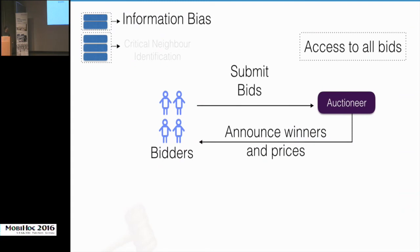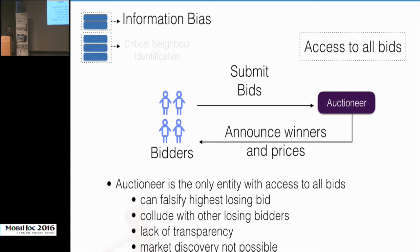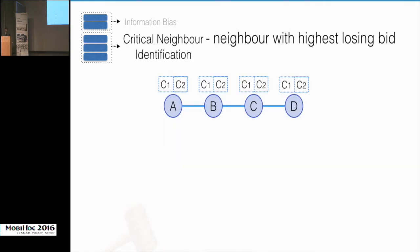In a typical sealed-bid auction, the auctioneer is the only entity with access to all the bids, while bidders have no access to other bidders' information. This information bias is what enables the auctioneer to lie about the highest bid — if everyone knew the bids, or if the auctioneer didn't know the highest bid, this wouldn't be possible. The second issue is critical neighbor identification: to determine second prices with conflict graphs, you need to identify the neighbor with the highest losing bid, called the critical neighbor.